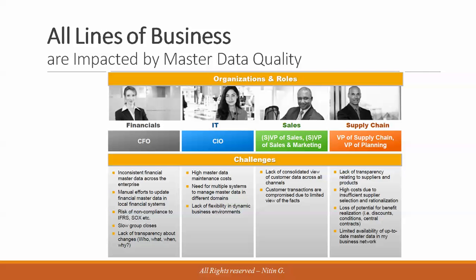All lines of business are impacted by master data quality. Different support organizations within a company — finance, IT, sales, and supply chain — all suffer because data quality does not meet expectations. Supply chain in particular is a very critical function affected by these data quality issues.